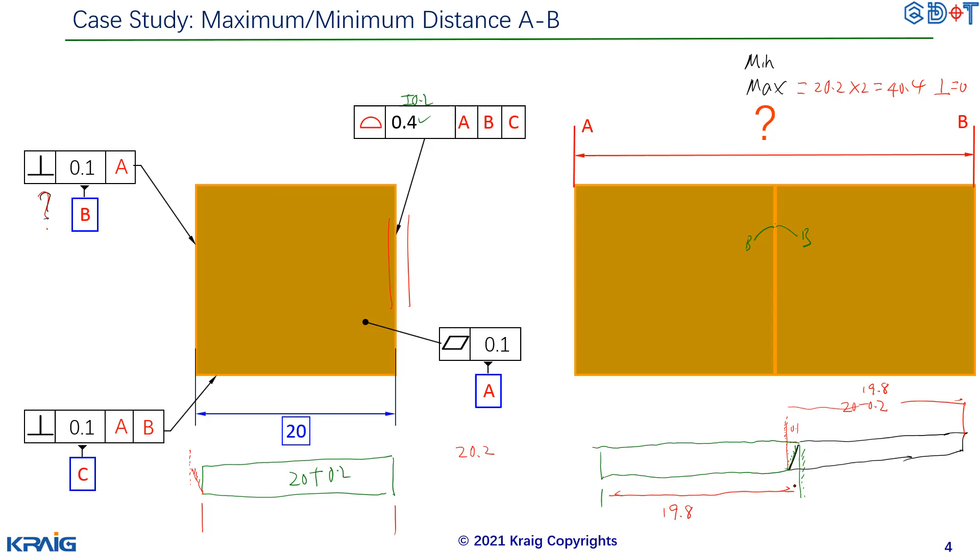There's a 0.1 overlap here. So the minimum supposed to be 19.8 times 2, and then you minus 0.1. This is the orientation. That's the minimum. So from here, we can see this orientation will minus 0.1 from minimum, but won't affect the maximum. That's the conclusion for this case.